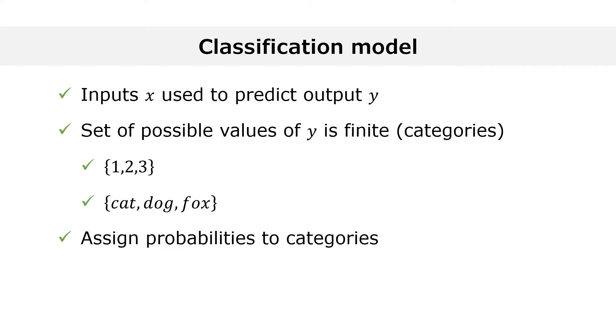For example, if y can be a cat, dog, or fox, a classification model could tell us that, conditional on x, y is a cat with probability one-half, a dog with probability one-fourth, and a fox with probability one-fourth.